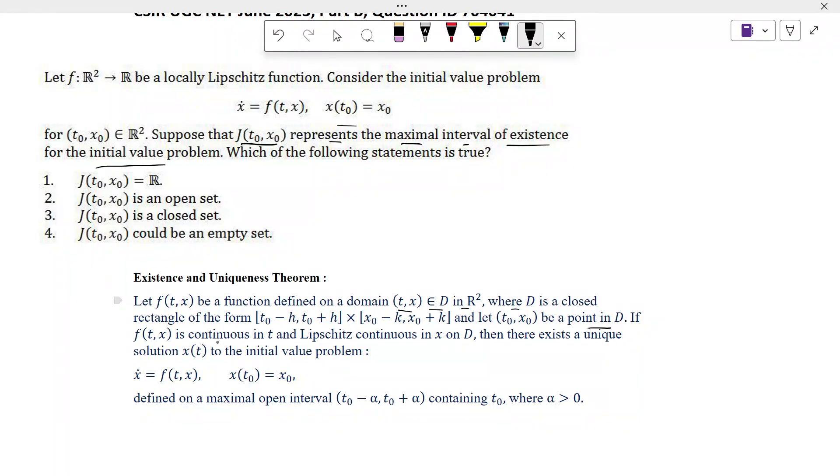If f(t,x) is continuous in t and Lipschitz continuous in x on D, then there exists a unique solution x(t) to the initial value problem defined on a maximal open interval (t0 minus alpha, t0 plus alpha) containing t0 where alpha greater than equal to 0.